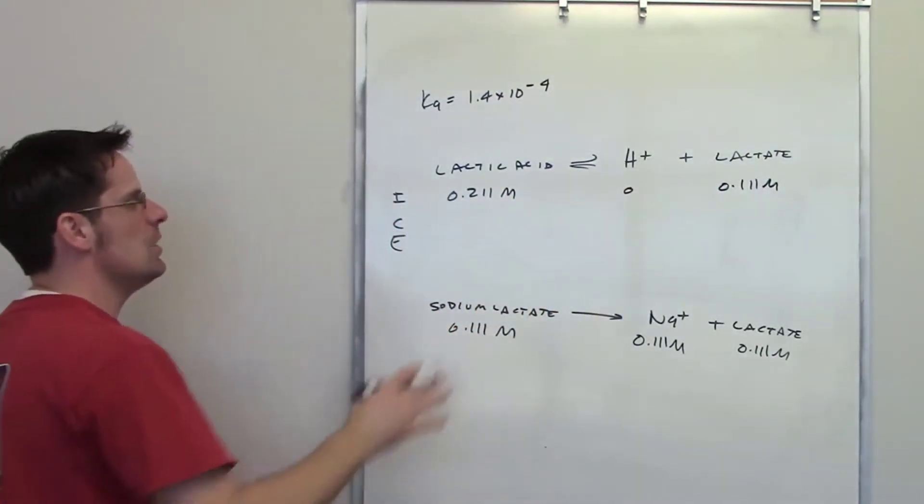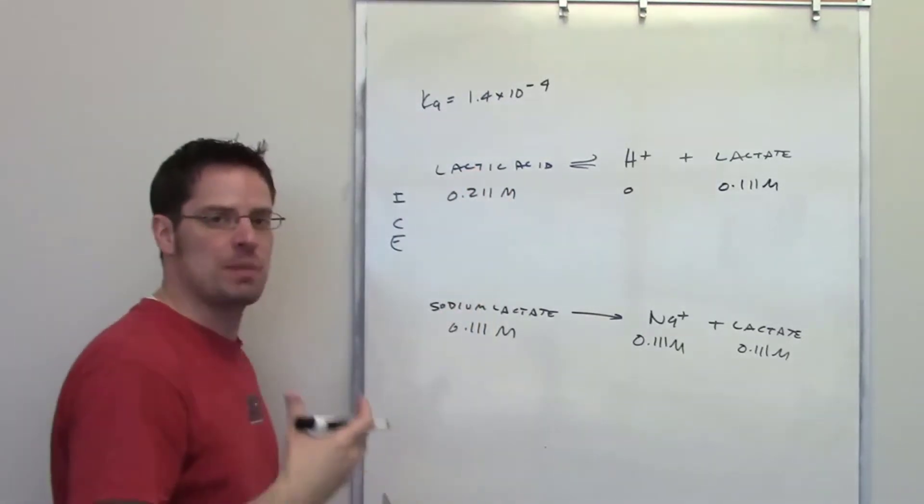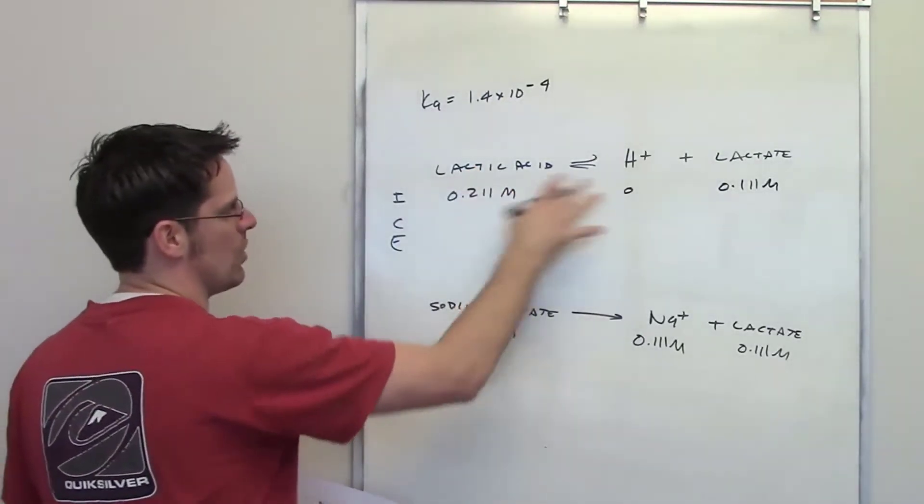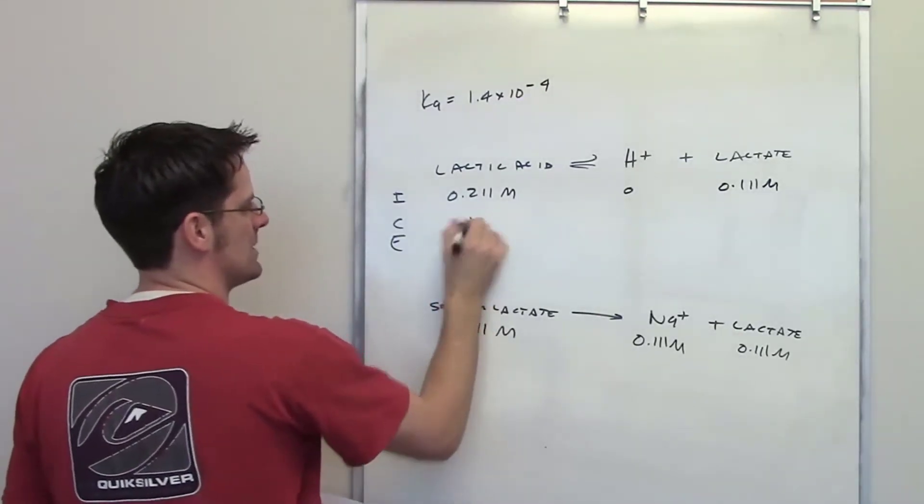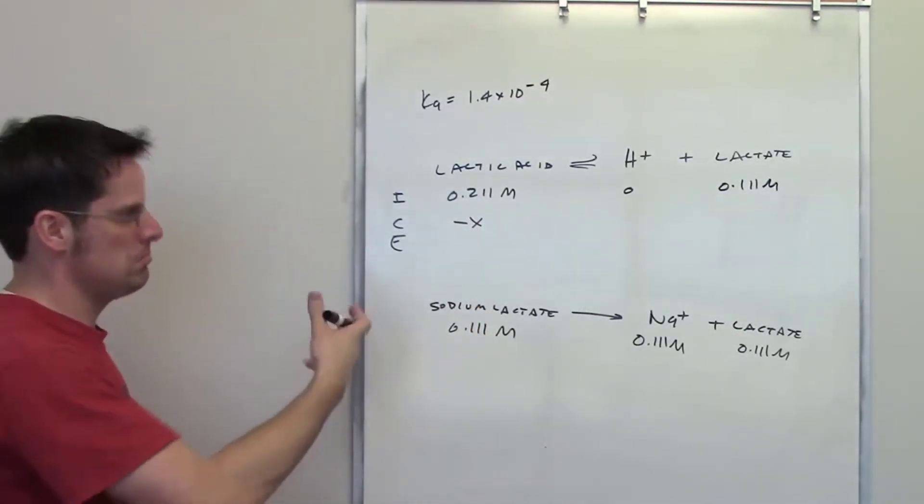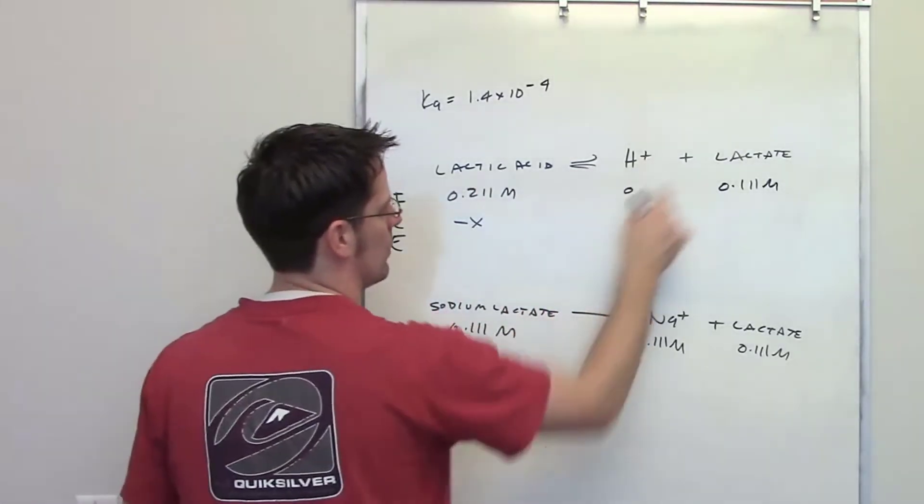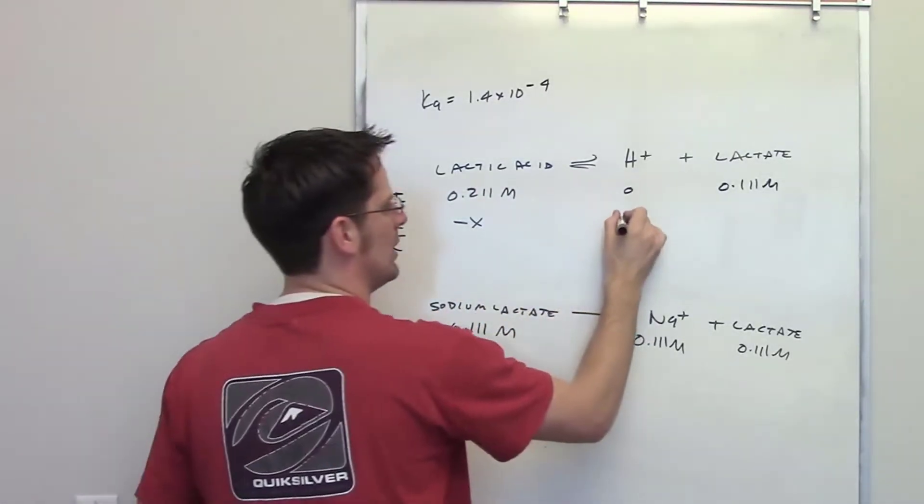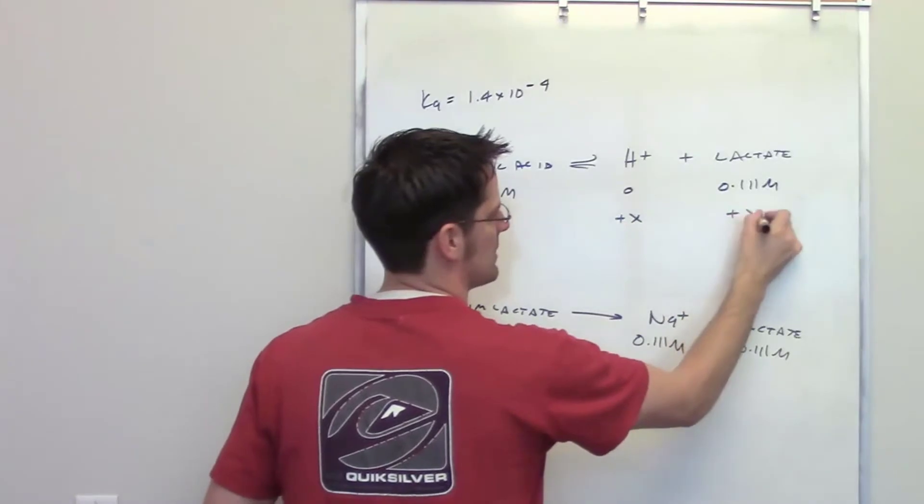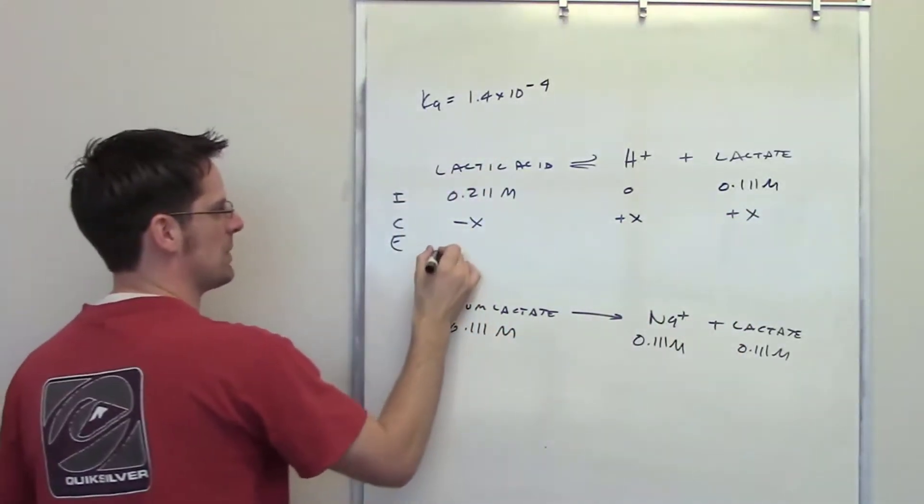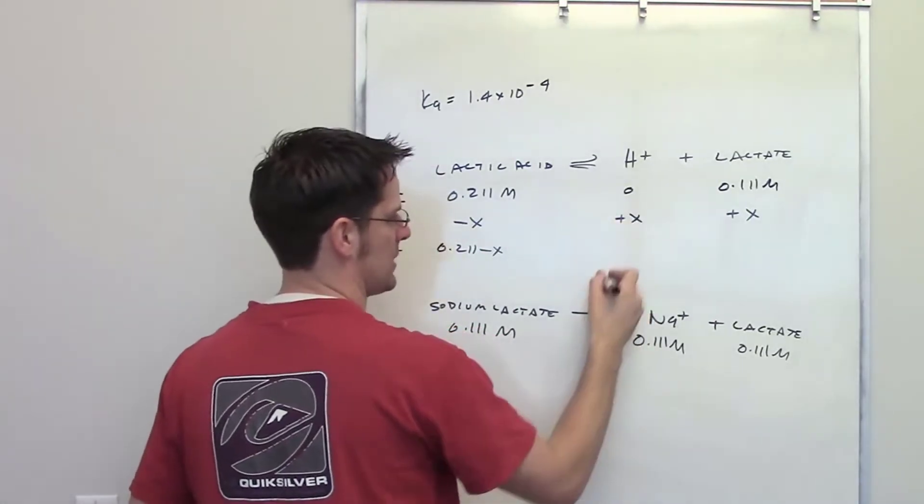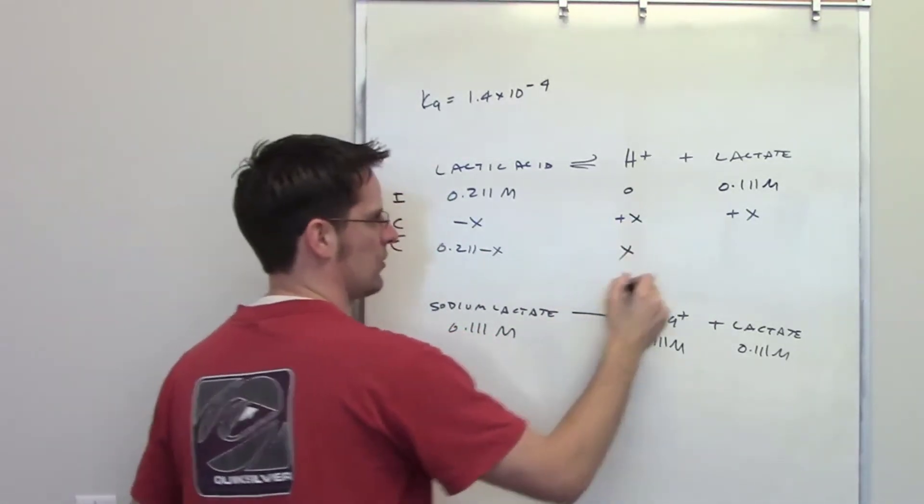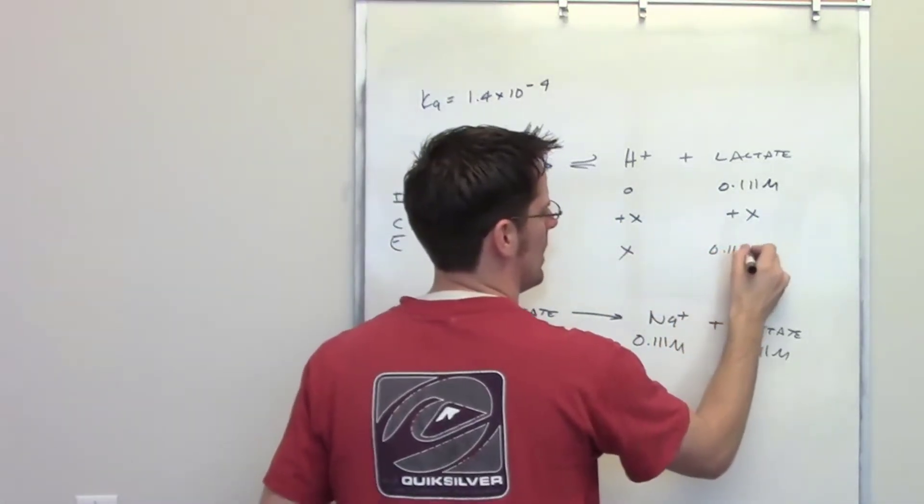I'm going to go ahead and realize that lactic acid is going to decrease by some amount over the course of going back and forth and back and forth until it reaches equilibrium, which I will call X. So as it decreases, it will decrease by an amount minus X. Because they're present in a 1 to 1 to 1 ratio, H+, and lactate will increase in their amounts by plus X. So the final equilibrium concentration of each of these is 0.211 minus X, X, and 0.111 plus X.